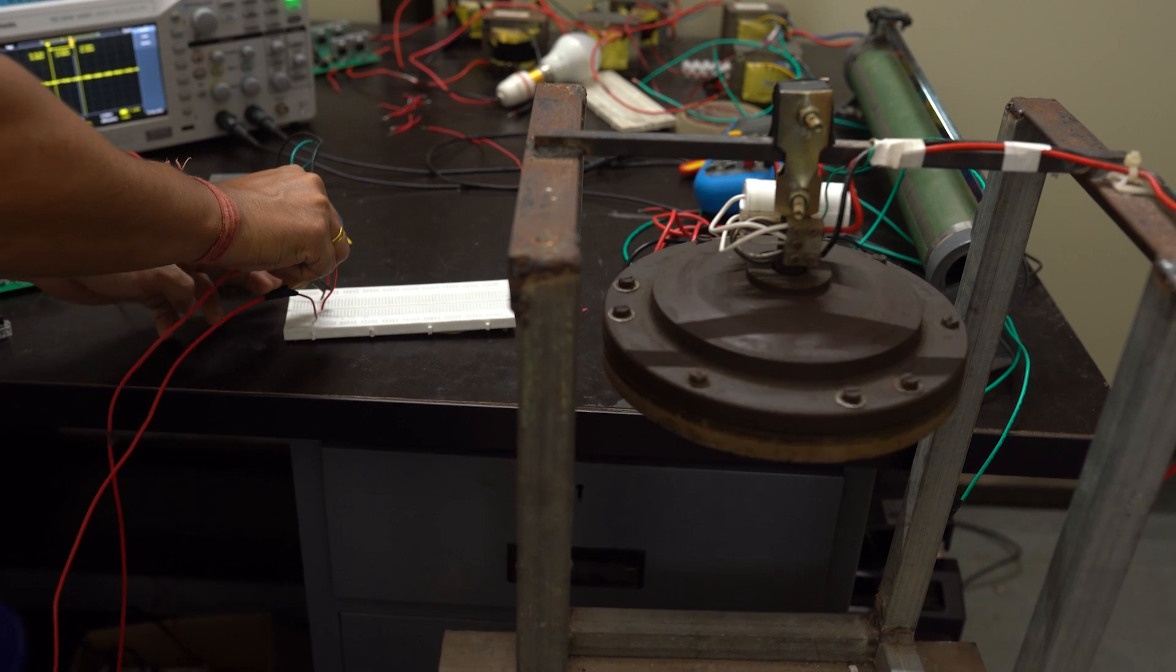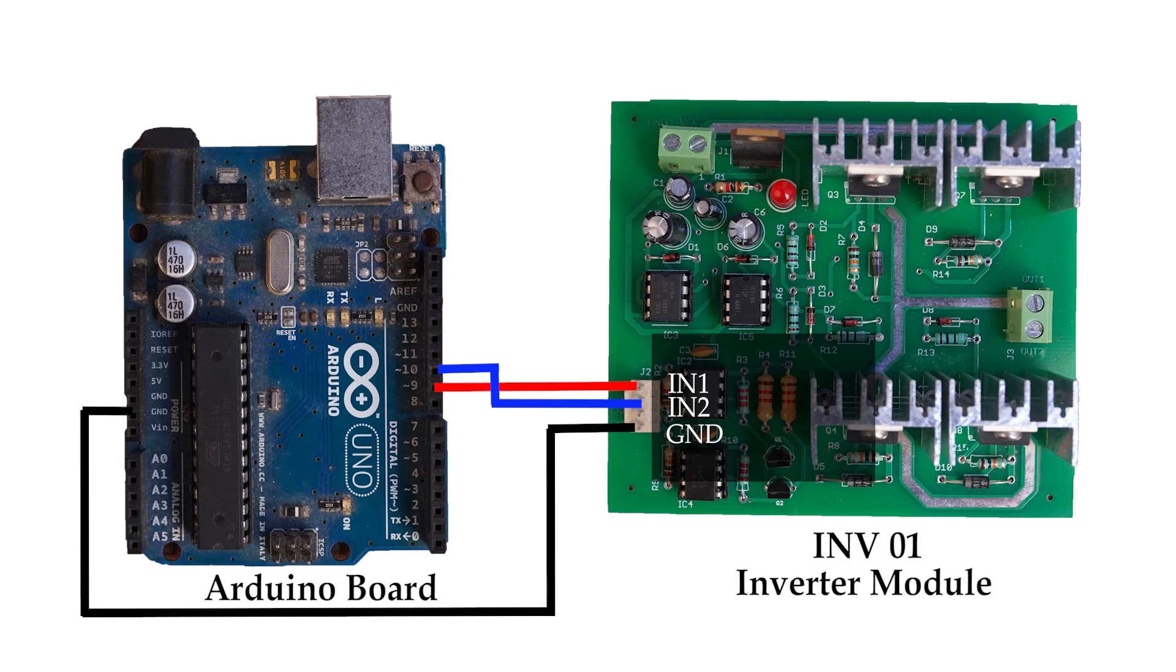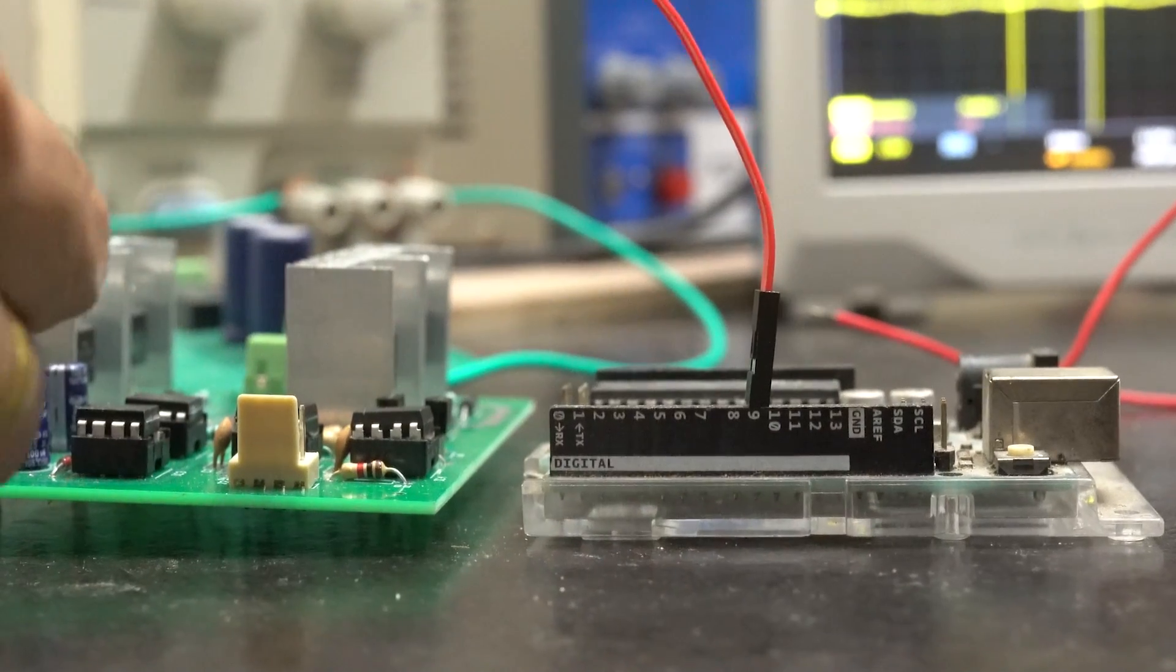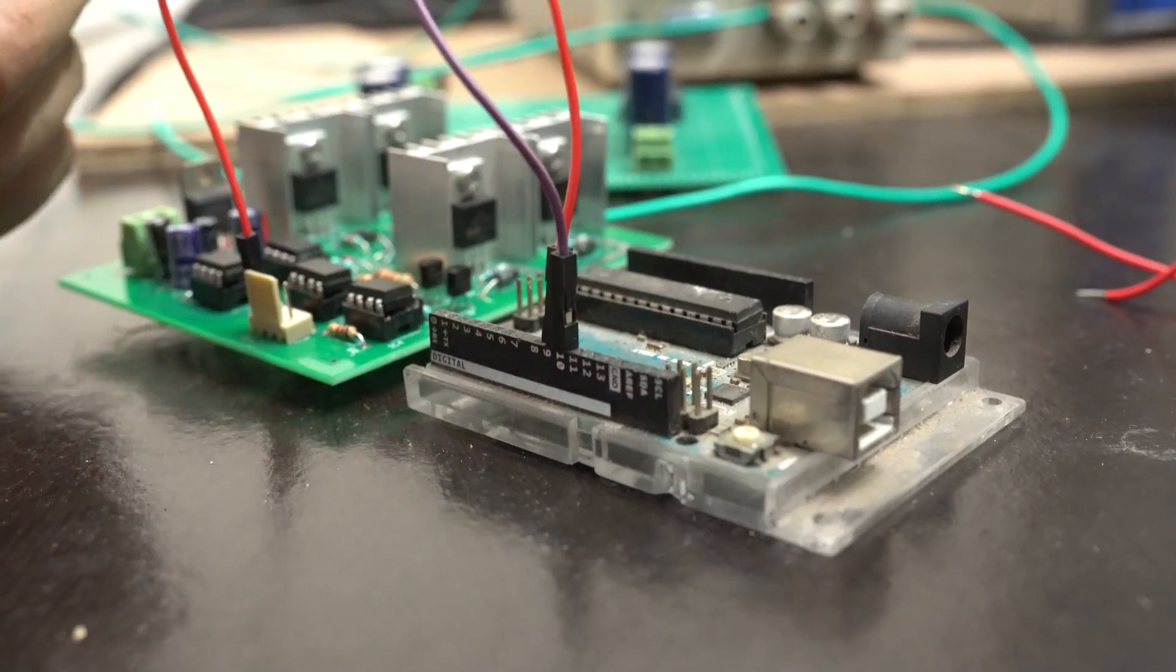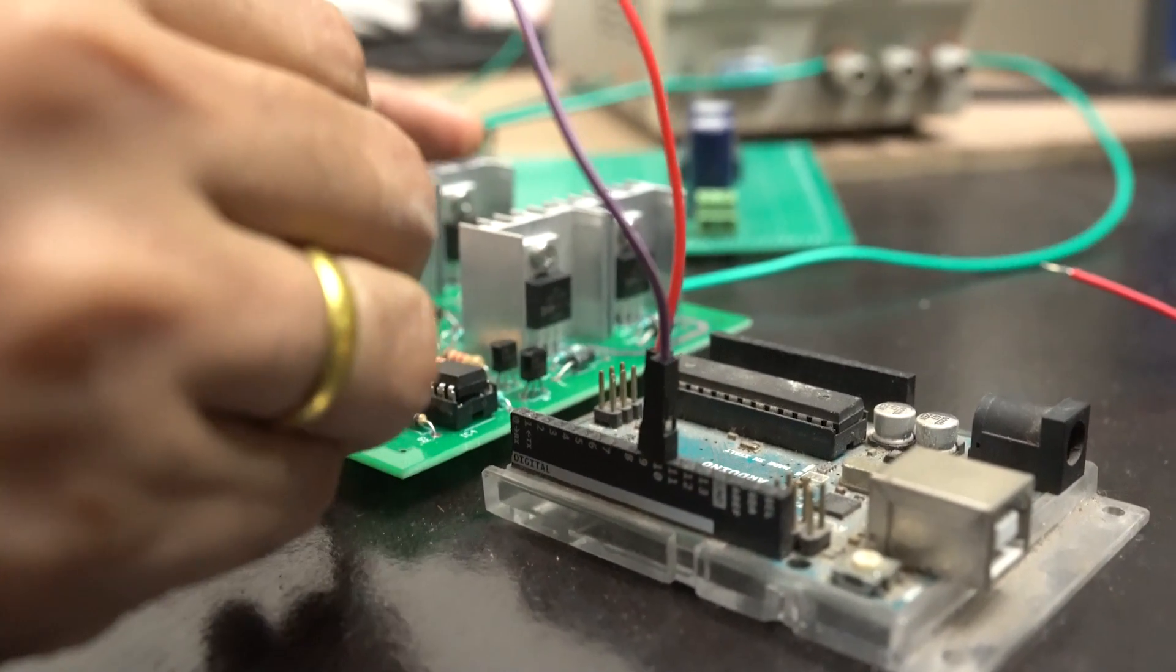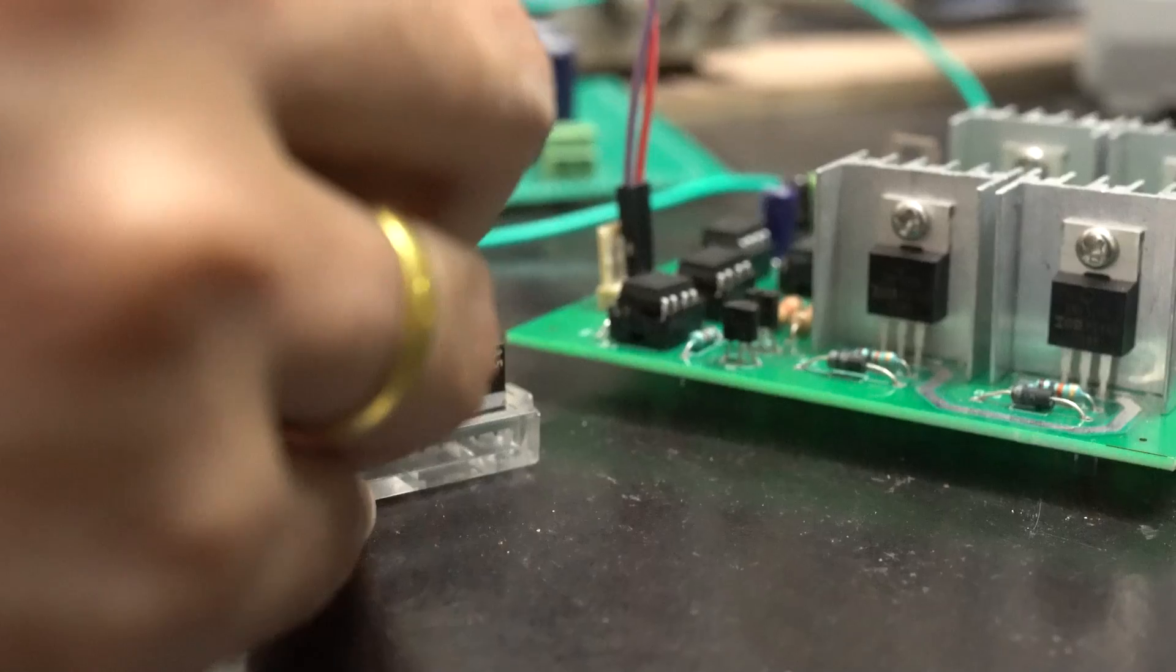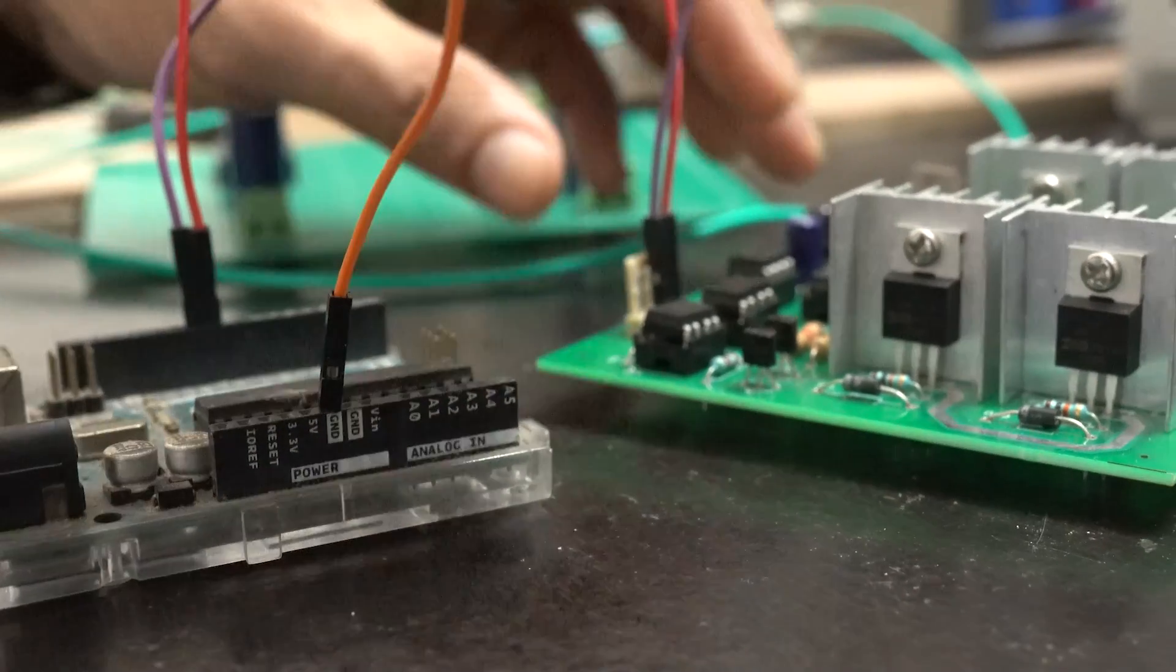Arduino digital output pins are connected to the control pins of the INV-01 module. Digital pin 9 is connected to the first control pin of the module. Digital pin 10 is connected to the second control pin of the module. Also connect the ground pins of Arduino and module together.